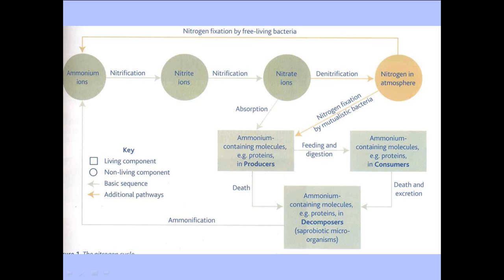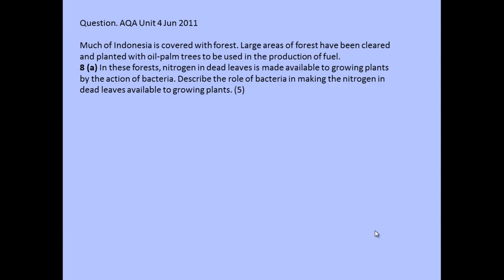Hi and welcome to my third video about cycles. Today we are going to be looking at answering exam questions to do with the nitrogen cycle. In the last two videos, we looked at how the nitrogen cycle was ordered and the different places that you could find nitrogen in living things and how that can get converted into different types of nitrogen-containing compounds. Today we're looking at a typical question from an A-level examination paper, specifically from AQA Unit 4, June 2011.